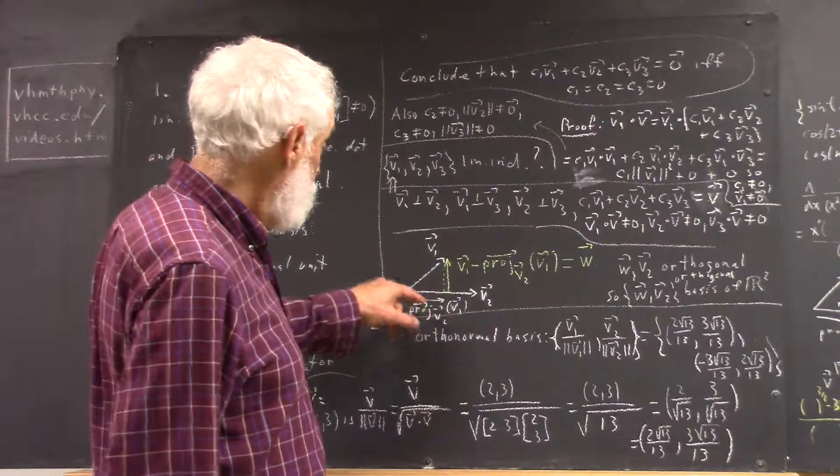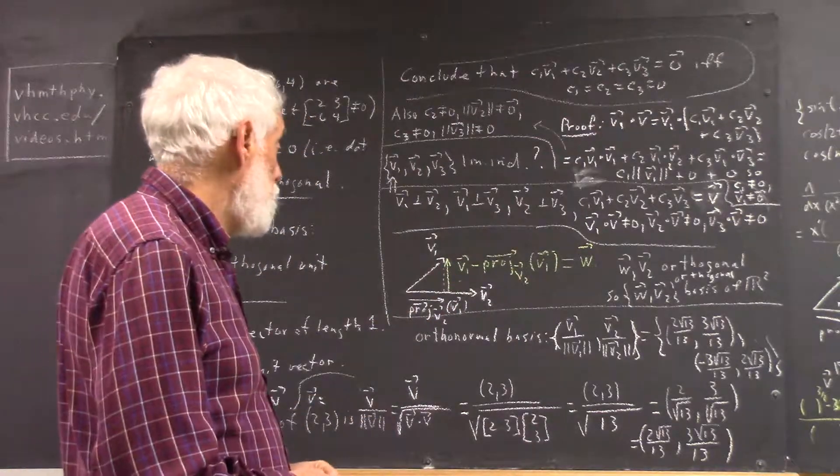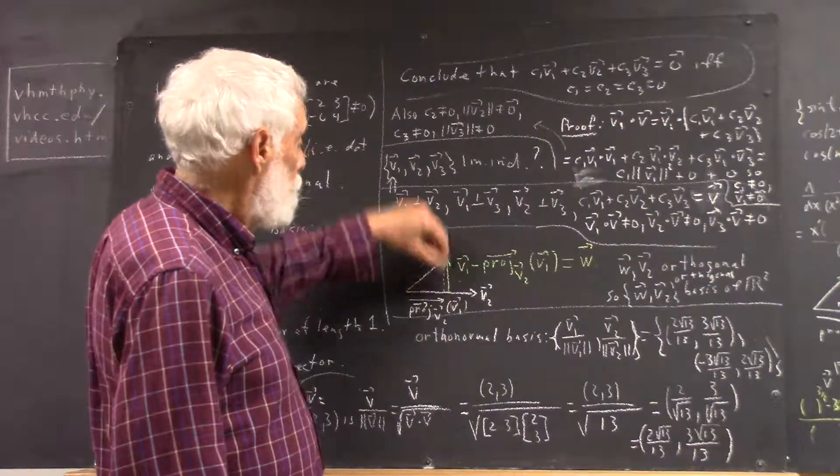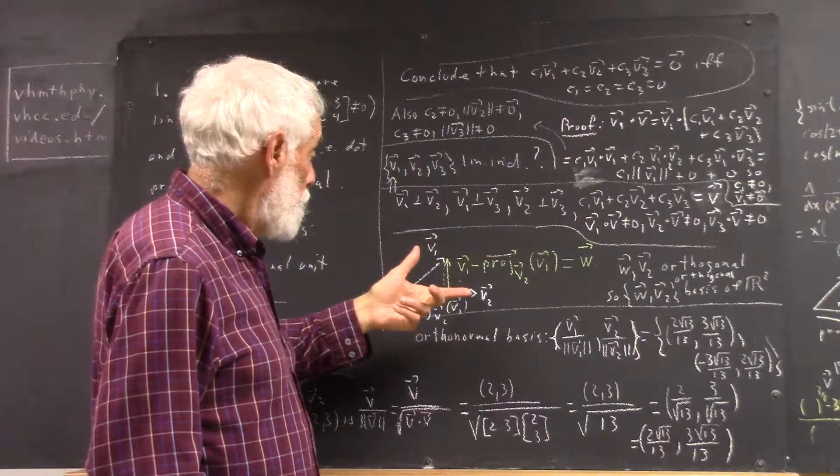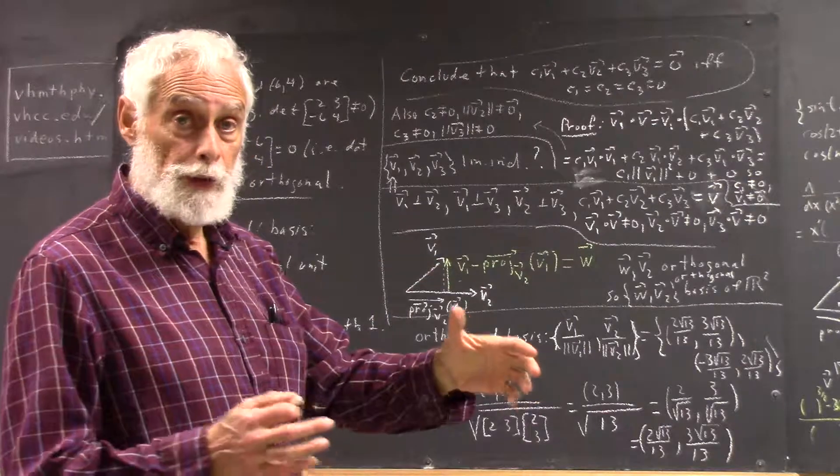If you subtract this projection from V1, as we saw in the preceding class, you get a vector that's perpendicular to the vector V2. In general, we're going to say this is orthogonal, because orthogonality is a generalization of perpendicular.